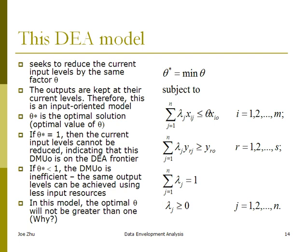And again, this is an input oriented model. Because the model tries to reduce the current input level by the same factor, theta, which is the efficiency score. If theta is equal to 1, then the DMU is on the frontier. Otherwise, if it's less than 1, then the DMU is not on the frontier, in the sense that that particular DMU is enveloped by the frontier, and I think that's why it's called data envelopment analysis.